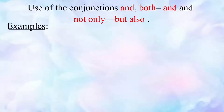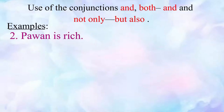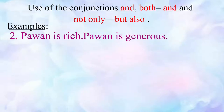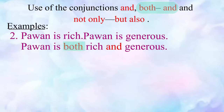Now let us look at the second example. The first sentence is 'Pavan is rich' and the second is 'Pavan is generous'. We shall join these sentences using the conjunction 'both...and'. Please repeat this sentence after me: Pavan is both rich and generous.